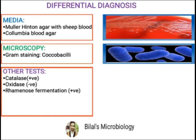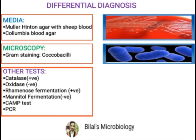You can also use different biochemical tests: Listeria monocytogenes is catalase positive, oxidase negative, rhamnose fermentation positive, mannitol negative. There is also a specific CAMP test used for Listeria monocytogenes. For a more reliable diagnosis, you can use PCR.